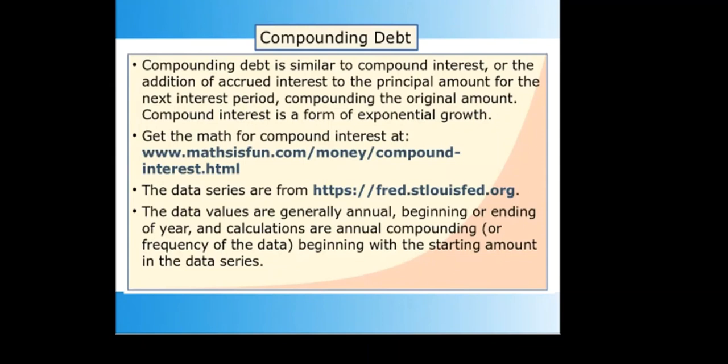The process of constant percentage growth is the same mathematics as compound interest. You can find the math for compound interest at mathisfun.com/money-compoundinterest.html. The data series I use in this slideshow are from the St. Louis Fed at fred.stlouisfed.org. The data values are generally annual beginning or end-of-year, and calculations are annual compounding beginning with the starting amounts in the data series.